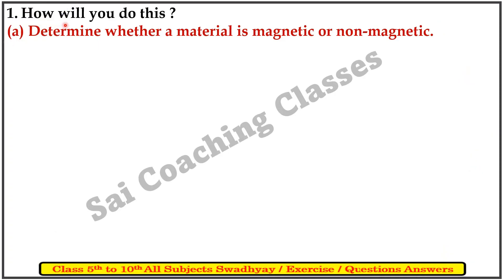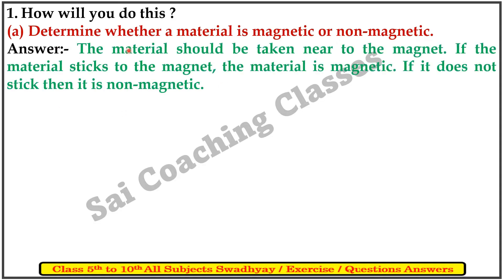First question says, How will you do this? A. Determine whether a material is magnetic or non-magnetic. Answer: The material should be taken near the magnet. If the material sticks to the magnet, the material is magnetic. If it does not stick, then it is non-magnetic.